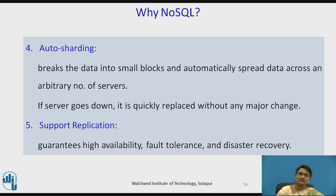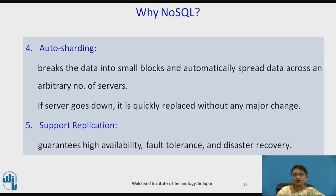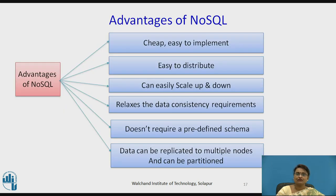Auto-sharding is also provided by NoSQL. It breaks data into small blocks, automatically spreads them, processes them, and recombines them. If a server goes down it is immediately replaced by another. It supports replication, guaranteeing high availability, fault tolerance, and disaster recovery.